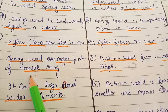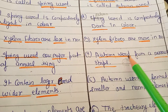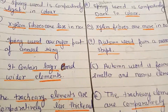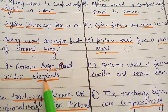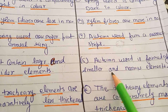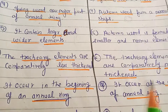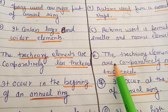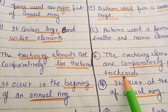Spring wood forms the major part of the annual ring. Autumn wood is a narrow strip and contains larger vessel elements, as well as small and narrow elements. Tracheary elements are comparatively less thickened in spring wood, while late wood has more thickened tracheary elements.